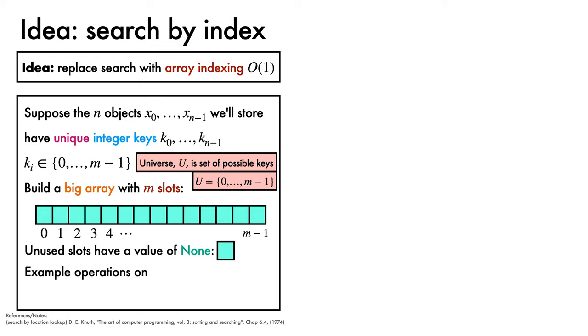Let's consider some example operations with our big array on two objects, x0, which we'll assume has a key of 2, and x1, which we'll assume has a key of 4. To insert x0 and x1 into our big array, we use their keys as indices, so x0 goes in slot 2, and x1 goes in slot 4.